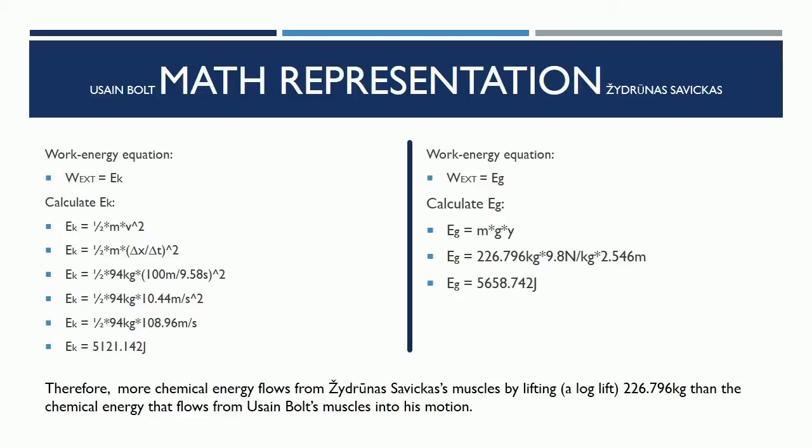Gravitational energy equals 226.796 kilograms times 9.8 newtons per kilograms times 2.546 meters. Gravitational energy equals 5,658.742 joules. Therefore, more chemical energy flows from Zydranus than Usain.